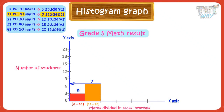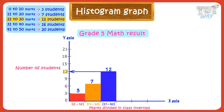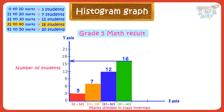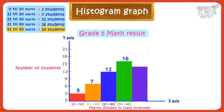The next class interval is 21 to 30 marks, and this category has 12 students, so make a bar up to the mark of 12. Next is 31 to 40 marks, with 16 students, so make a bar up to the mark of 16. Next is 41 to 50 marks, with 20 students, so make a bar up to the mark of 20 and label it as 41 to 50. Our histogram is ready.